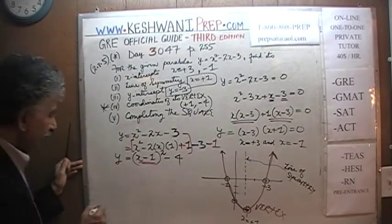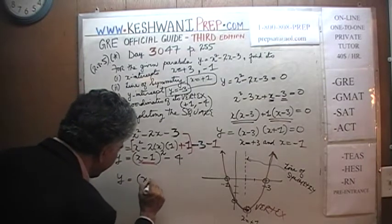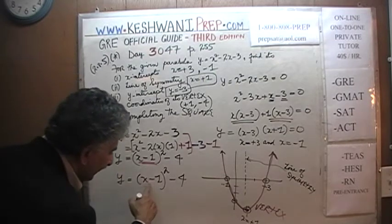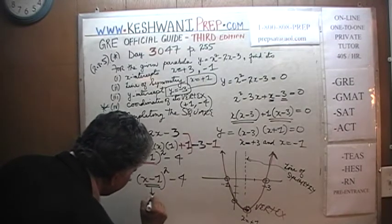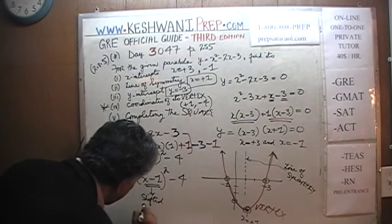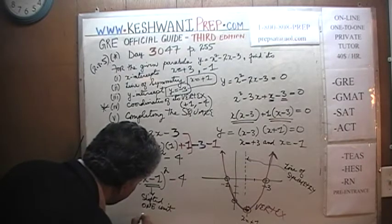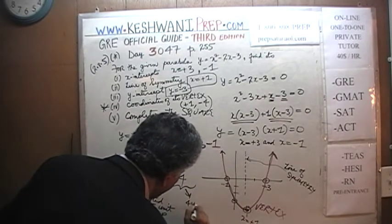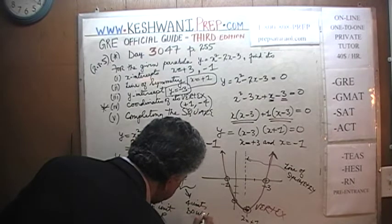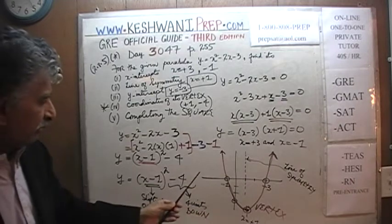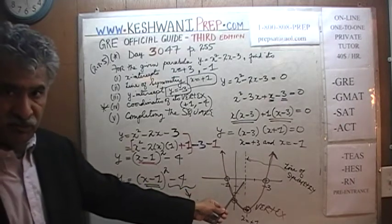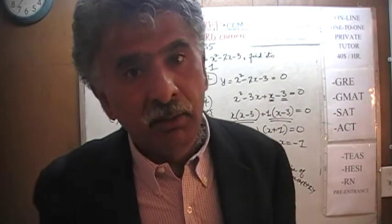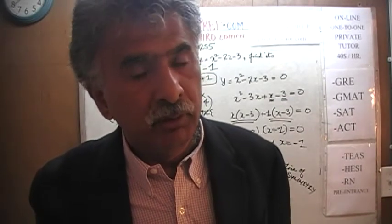Y = (X - 1)² - 4 tells us that the parabola is shifted 1 unit to the right and 4 units down — which is exactly what we saw graphically. The difference between the two approaches is that the graphical approach shows the shift visually, while completing the square shows the same fact mathematically and algebraically, without having to plot the graph.